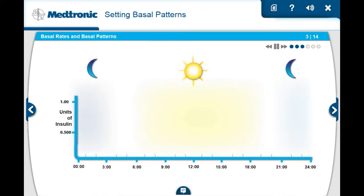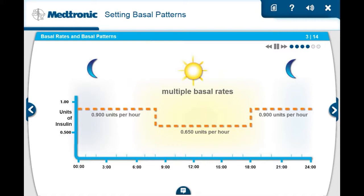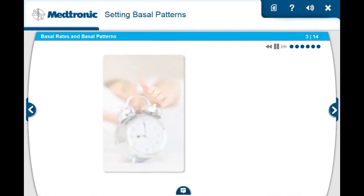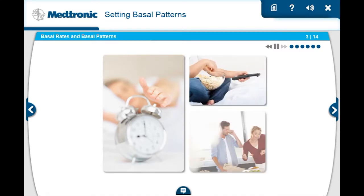You may simply start with just one basal rate that will deliver evenly over each hour, 24 hours a day. As you continue with pump therapy, your basal rates may need to be changed or you might need more than one basal rate to adjust to your body's various insulin needs. The rate or rates you need to cover 24 hours is called a basal pattern. Once your basal pattern is set correctly, you should be able to sleep late, eat late, or even skip a meal without your glucose going too high or too low.